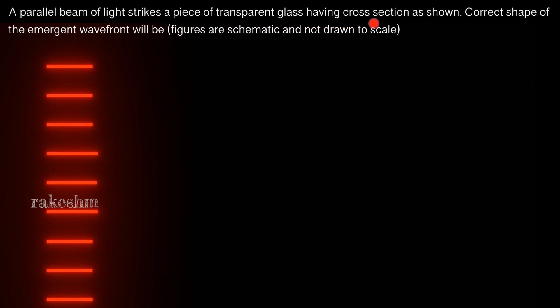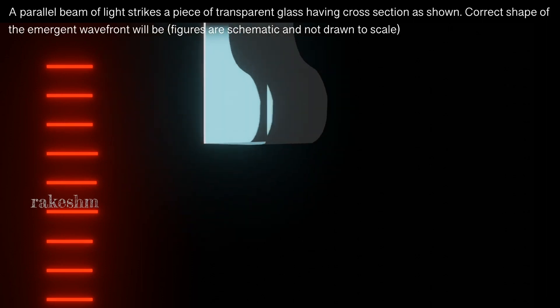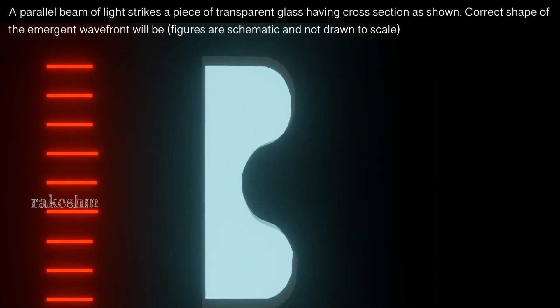So this is a parallel beam of light that we have here. Let us have a look at the glass — this is the glass here and it has a cross-section like the alphabet B, sort of. So this parallel beam of light strikes the glass.